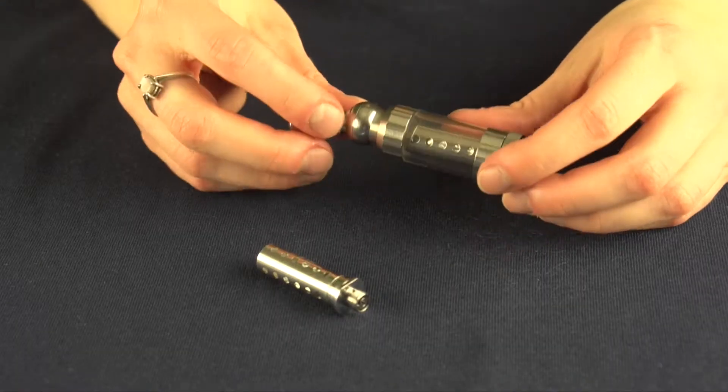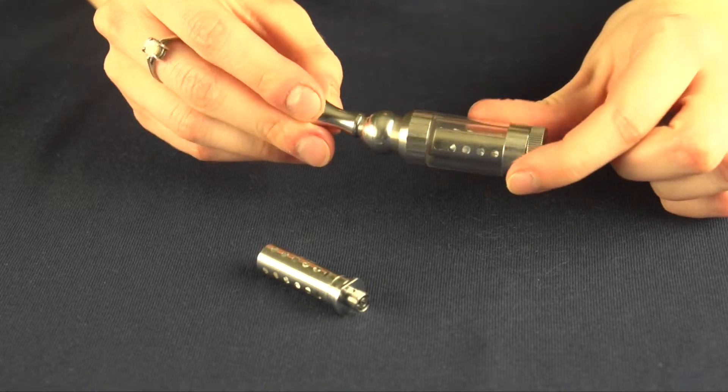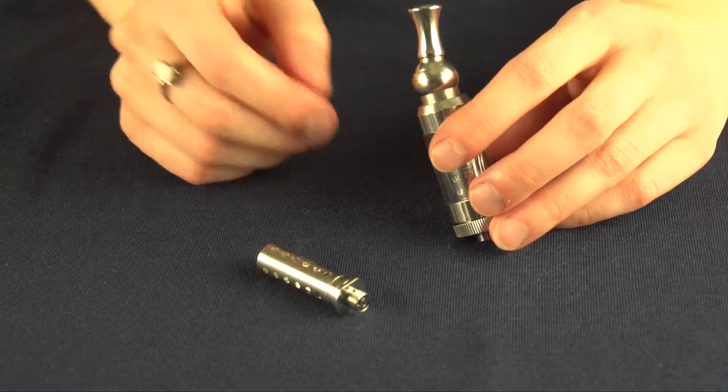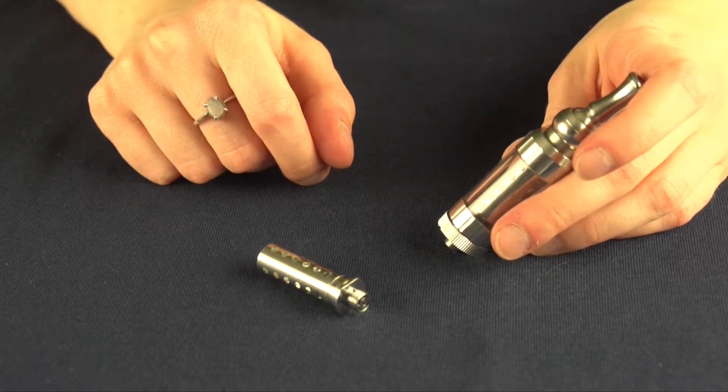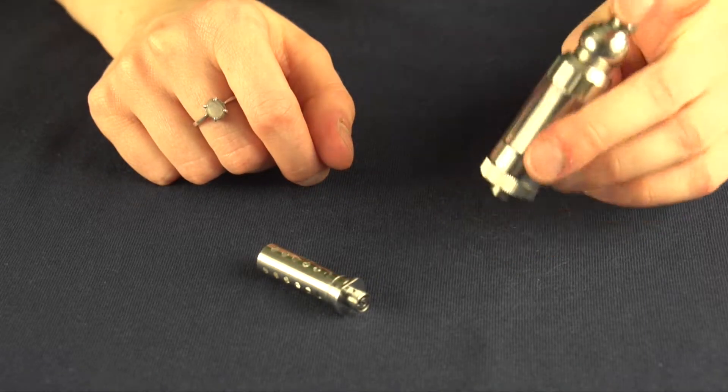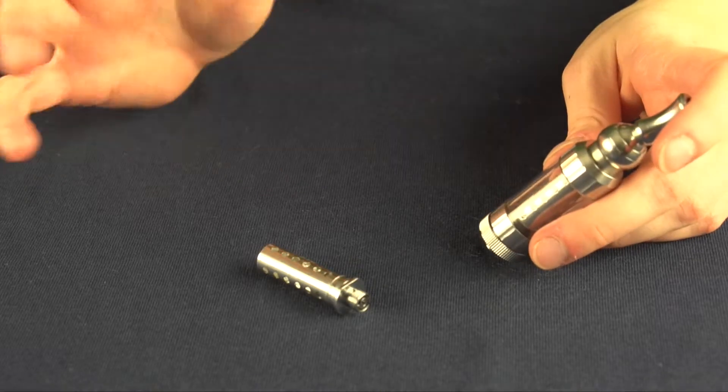That's all there is for the iClear 30S replacement coils. If you have any comments or questions, leave them in the comments section below. If you find these videos helpful, like and subscribe to our YouTube channel, and we'll see you next time.